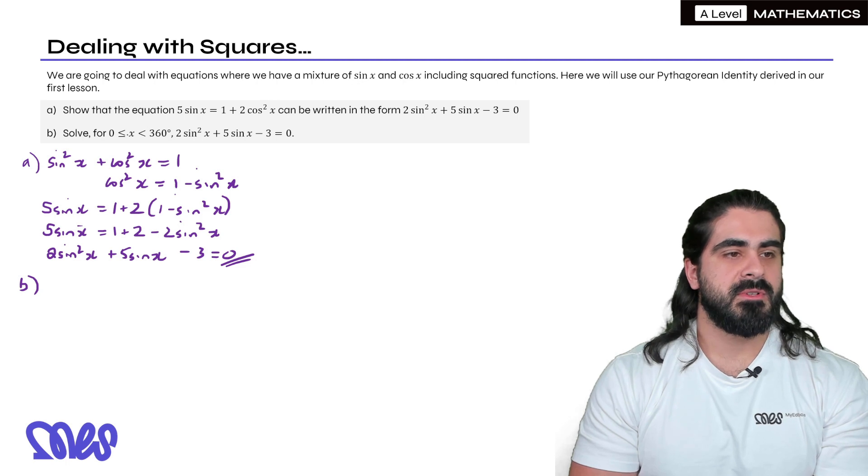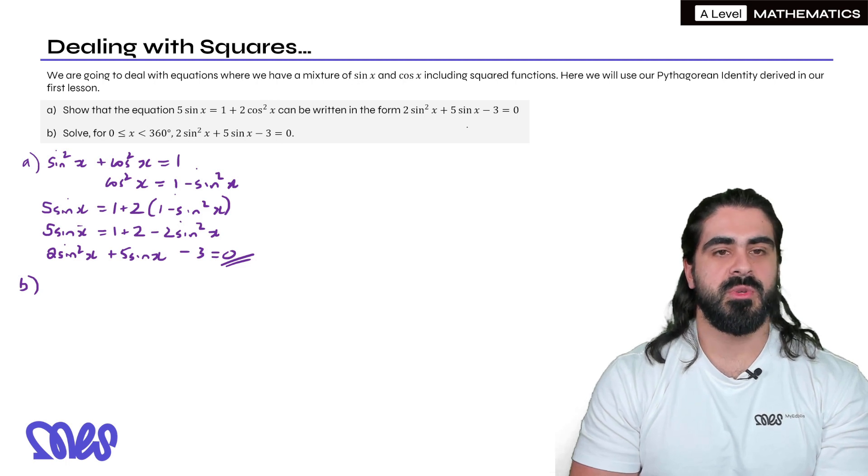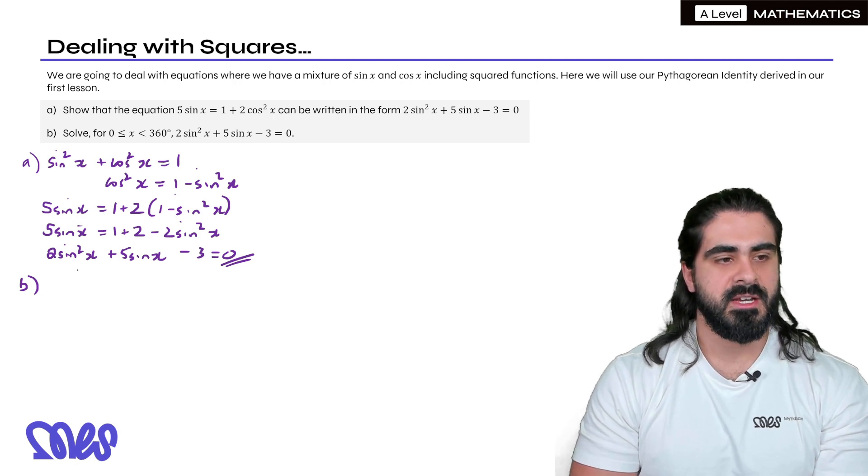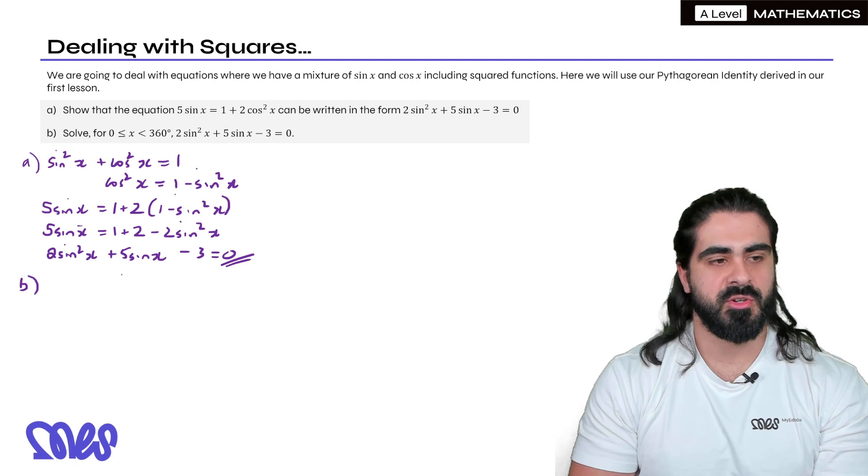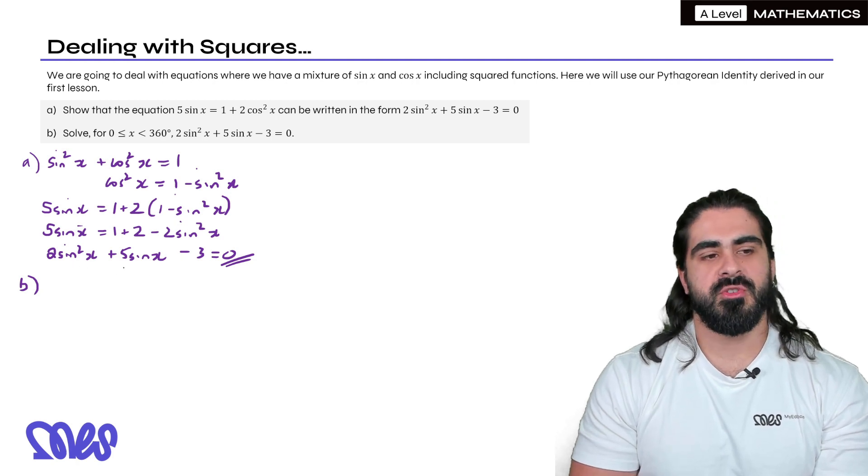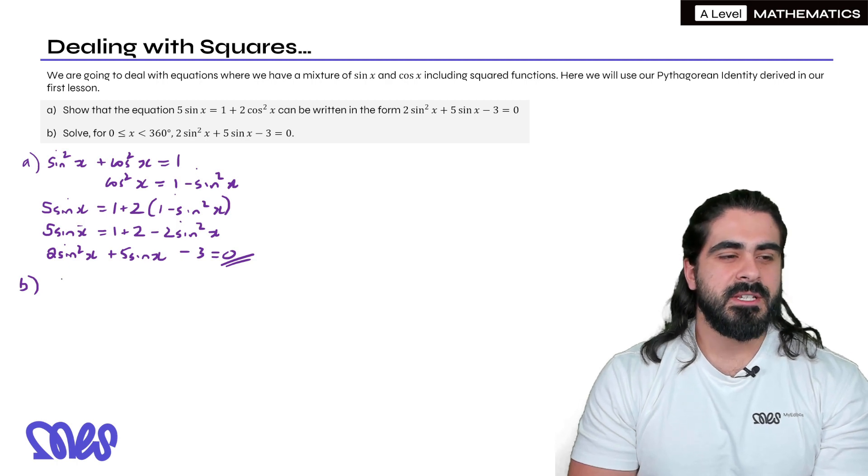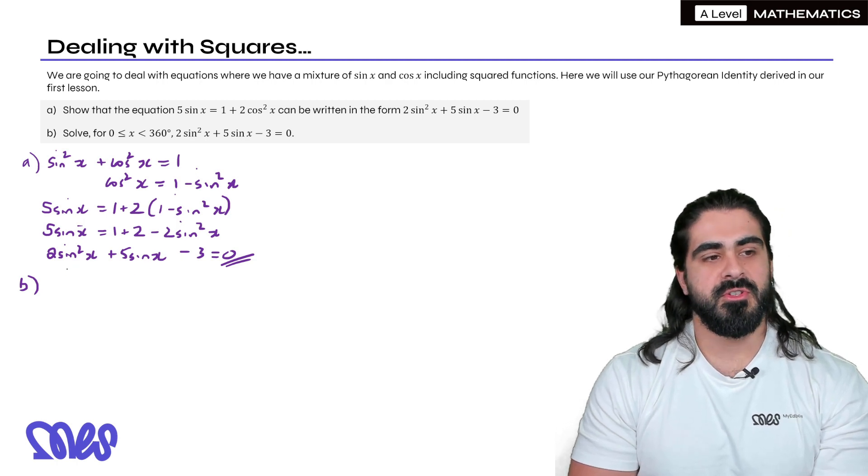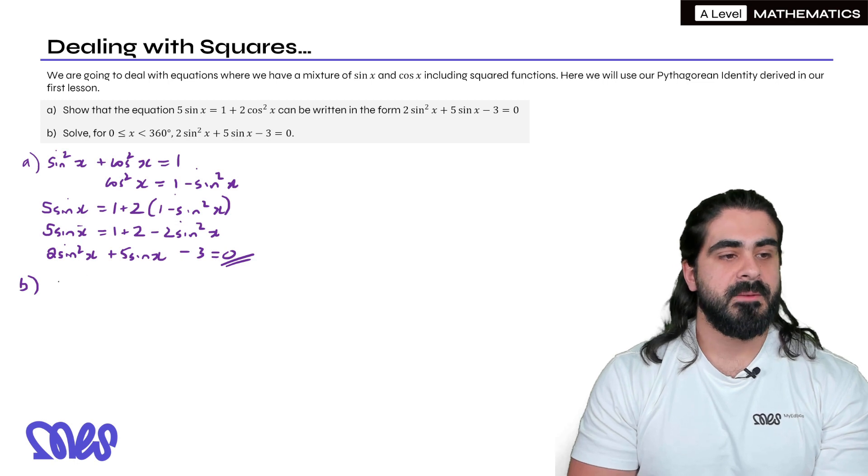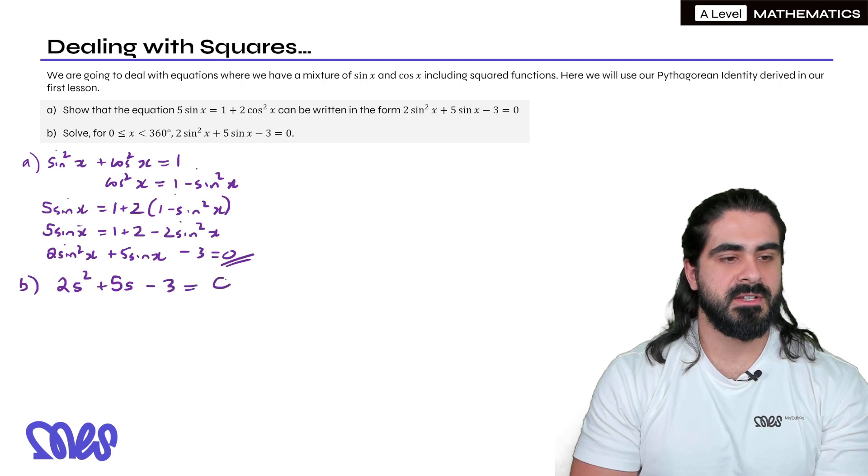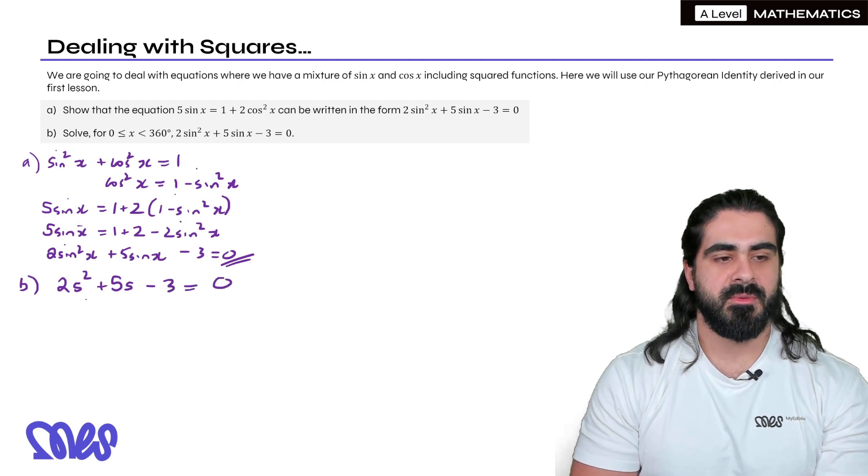Then it says solve for x being between 0 and 360, the equation we got in part a. Now to make your life easier this is obviously a quadratic. So you want to rewrite it in such a way that it looks more explicitly like a quadratic. You can let sine x equal y or u. I prefer to use u, but another way you could do it is instead of saying sine squared, just say s squared: 2s squared plus 5s minus 3 equals 0. So you just remember the s represents sine.